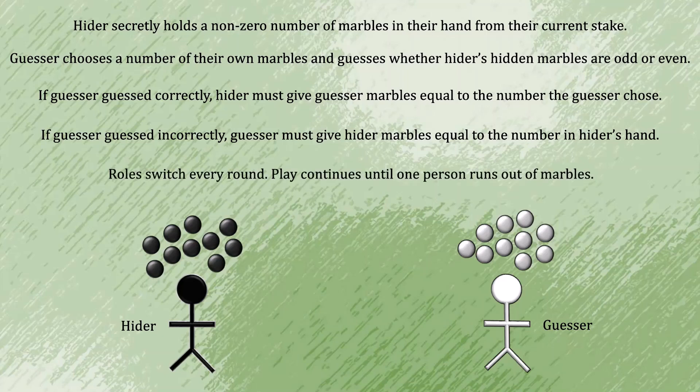The roles switch every round. So in the first round, if you're the hider, you become the guesser. And if you're the guesser in the first round, you become the hider in the second. Play will continue until one person runs out of marbles. The person that has run out loses. And if you've seen the show, you know what happens next.